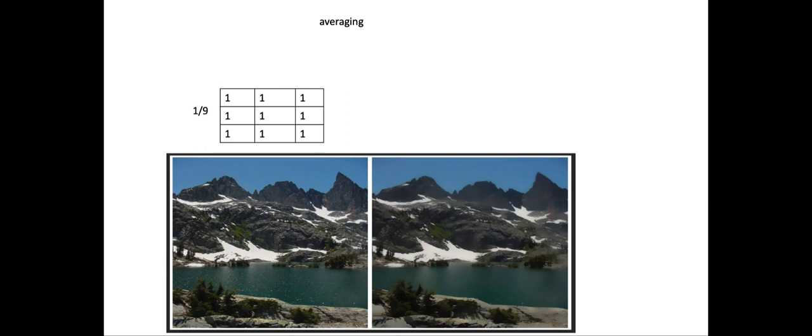Averaging is one approach where the pixel intensity of the center pixel is determined by taking the average of the neighborhood pixels. This is the visual effect we achieve — we remove a lot of detail and noise in the image, like water drops, and also the roughness on mountains and stone, and you can see a much smoother image.